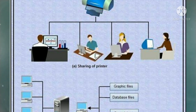We can place a disk with pictures on one computer and let other computers access those pictures. We can connect a printer or a scanner to one computer and let other computers on the network print or scan to that printer or scanner respectively.